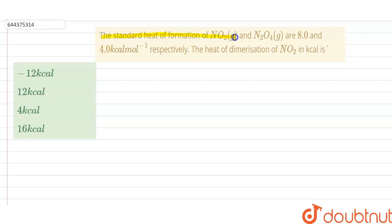The standard heat of formation of NO2 gas and N2O4 gas are 8 and 4 kilocalories per mole respectively. We have to find the heat of dimerization of NO2 in kilocalories. So first of all, we have to know what is the standard heat of formation.